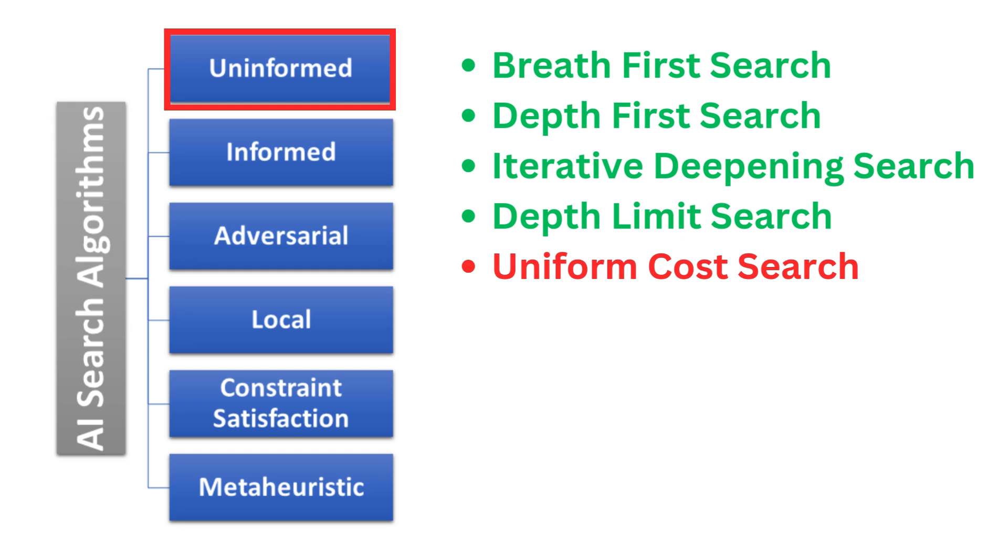In this video, we will break down UCS, analyze its properties and compare it with other famous search algorithms like BFS, DFS, IDS and DLS. Unlike BFS and DFS, Uniform Cost Search prioritizes the least cost path to expand next. It's a variant of BFS but takes into account the path cost rather than the depth or order of nodes.